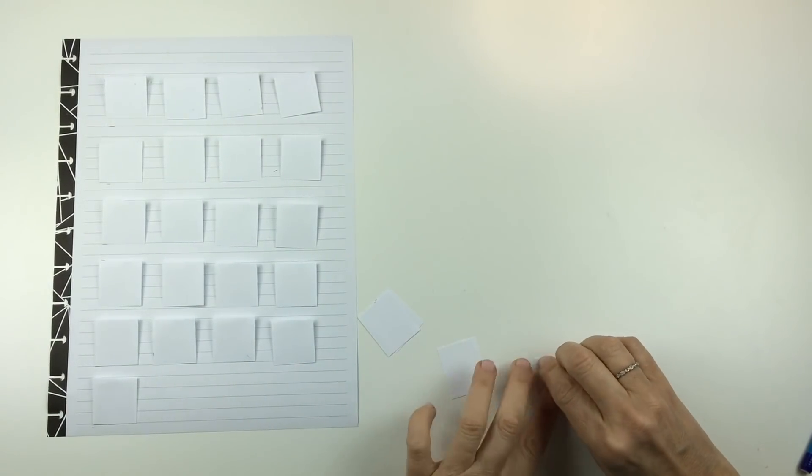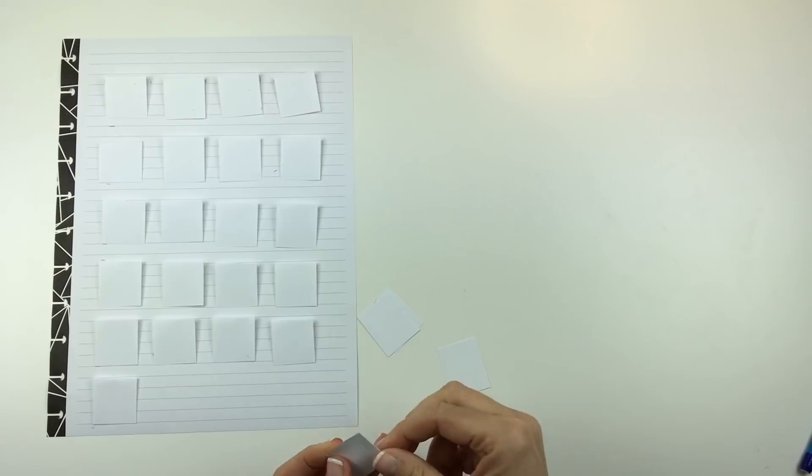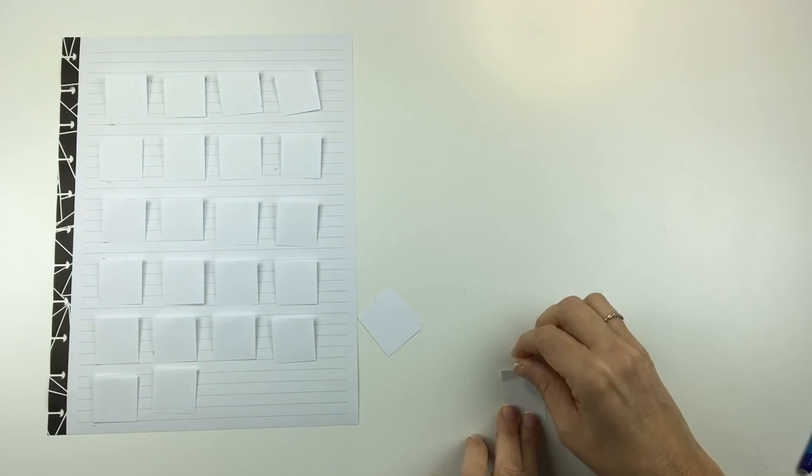So now that I have my squares, I am just going to, like I said, fold over a tiny flap at the top. So that's where my glue is going to go.